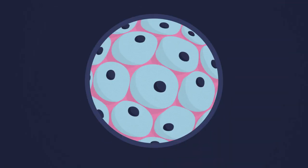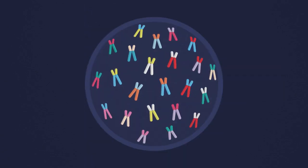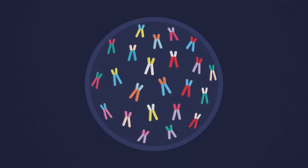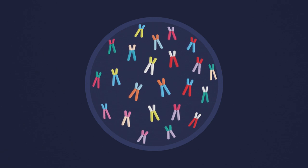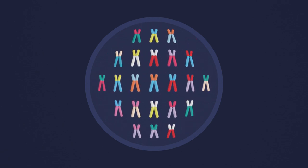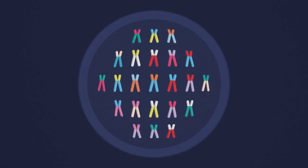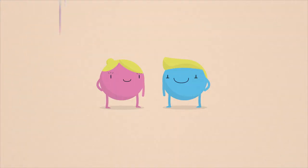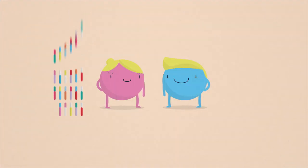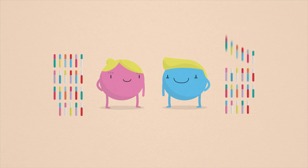Our bodies are made up of billions of cells. Inside each cell is our genetic material. Chromosomes are the packaging of our genetic material. We usually have 23 pairs of chromosomes, and we inherit one copy from our mother and one from our father.